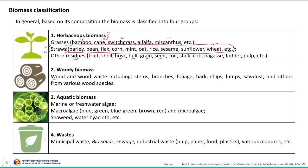Woody biomass includes wood and wood waste including stems, branches, bark, lumps, sawdust and other material from various wood species. Aquatic biomass includes any plant material formed in water like marine or fresh water algae, macro-algae, micro-algae, seaweed, water hyacinth, etc. Waste includes municipal waste, biosolids, sewage sludge, industrial waste, and various manures from specific sources.